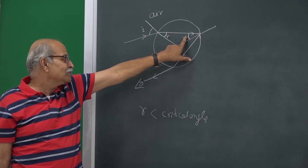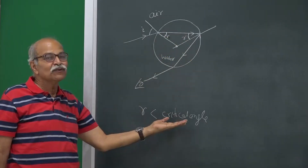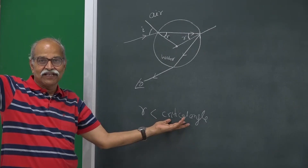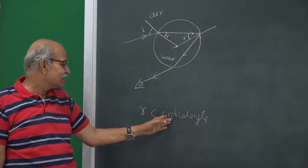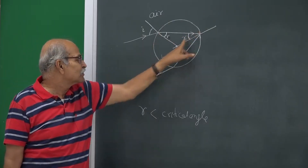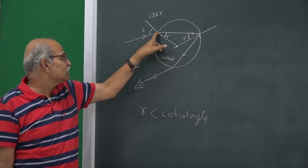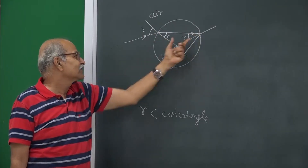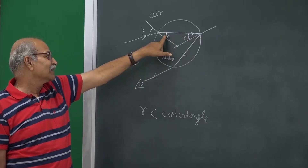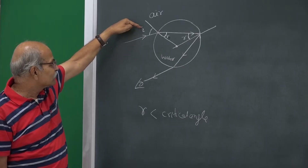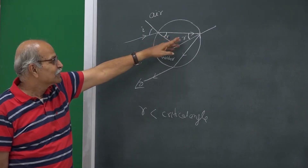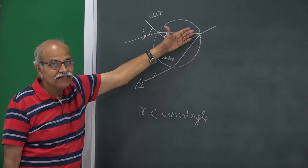For total internal reflection, the angle should be at least equal to the critical angle — in fact, greater than that. At exactly the critical angle you get grazing transmission, so it must be greater than critical angle for TIR. Since both radii are equal, the internal angle equals r. The maximum r can reach is the critical angle only when i equals 90 degrees. Therefore, you cannot have total internal reflection here.